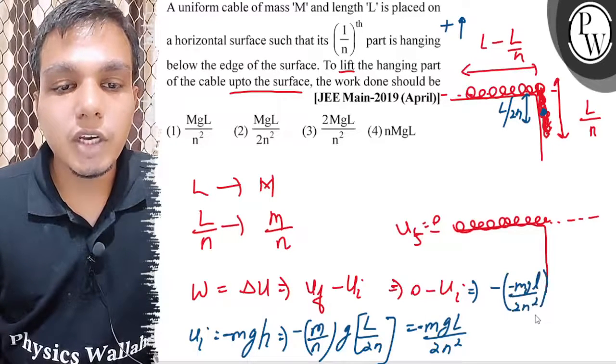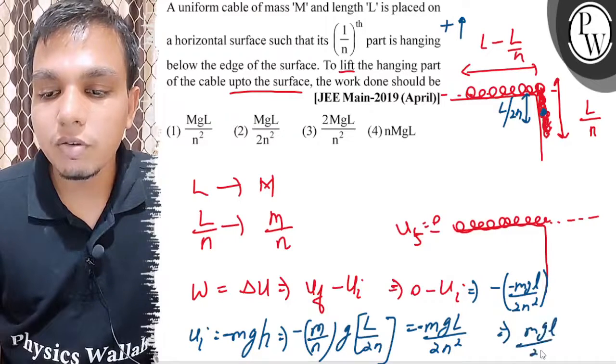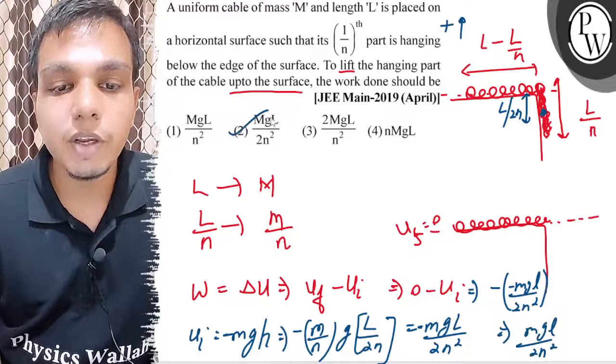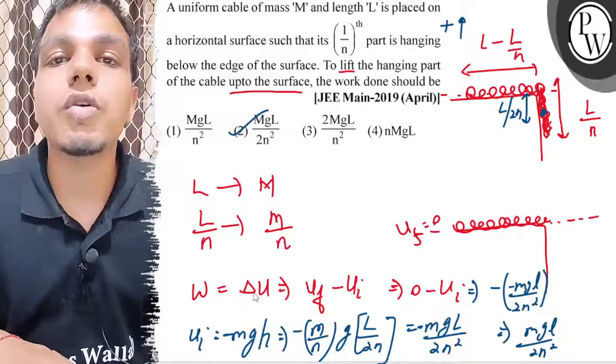So guys, MGL upon 2N square positive, and MGL upon 2N square positive, which is given in option B. So option B is the absolutely right answer. I hope you got the concept. Thank you so much and all the very best.